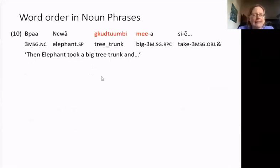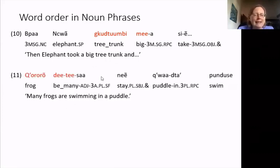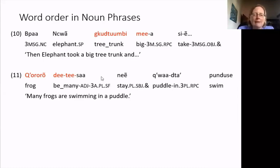Adjectives follow the noun, as we can see in example ten: 'Then elephant took a big tree trunk.' Quantifiers also follow, as in example eleven: 'Many frogs are swimming in a puddle.' The quantifier is derived from a verb, 'de', meaning 'to be many.' Example twelve gives us a case where the head of a noun phrase can be both preceded and followed by modifiers, if there is both a possessive relationship and a post-head modifier like an adjective. So we have the possessive 'my hand', and then the adjective giving 'my right hand' or literally 'my good hand'.